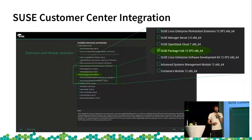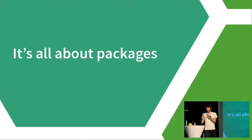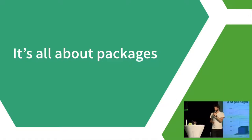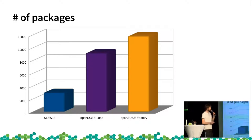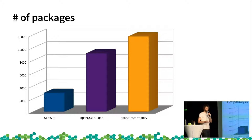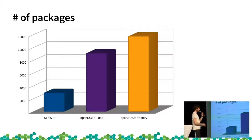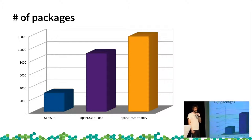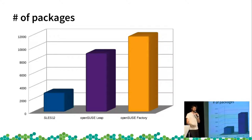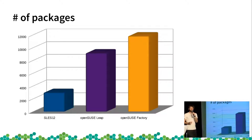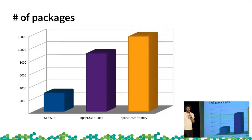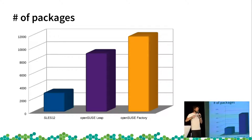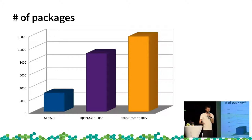So, what is PackageHub? Before I dive into PackageHub, I want to show you a diagram. This shows the amount of packages in several distributions. On the left you have SLES 12 — this is around, roughly, 3,000 packages. Then in the middle you have OpenSUSE Leap, which is around 9,000 packages. And then you have Factory, which is above 11,000 packages. So if you are on SLES, you don't have that huge variety you have with Leap, for example.